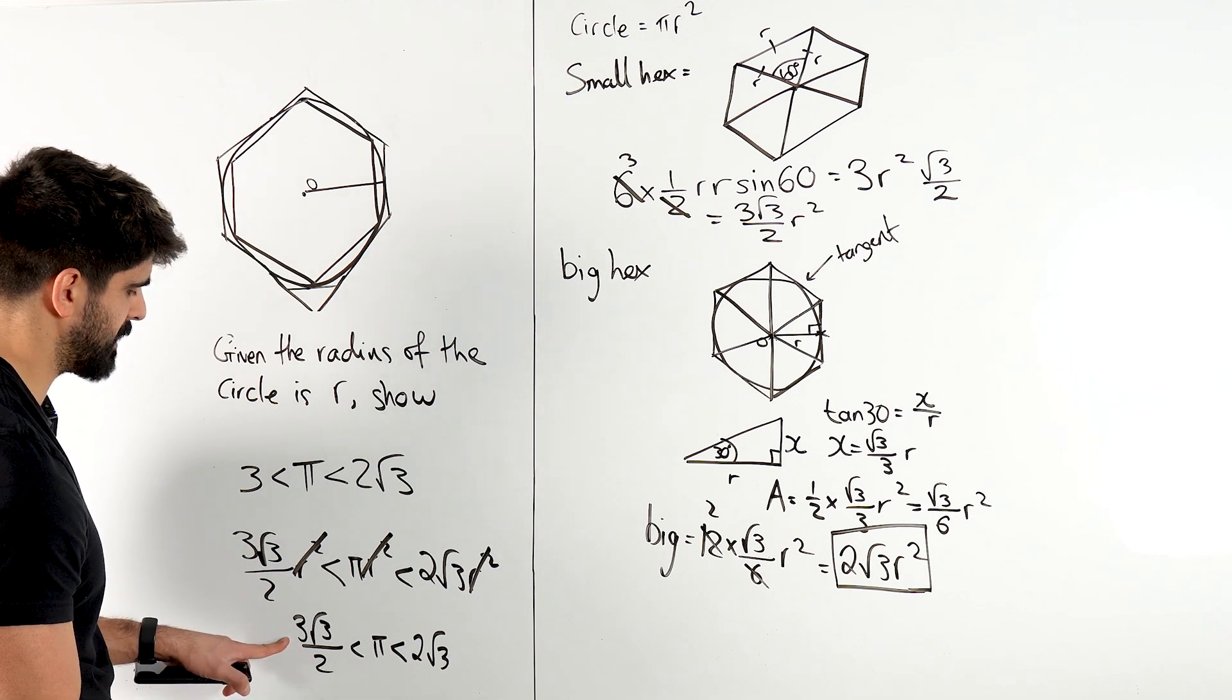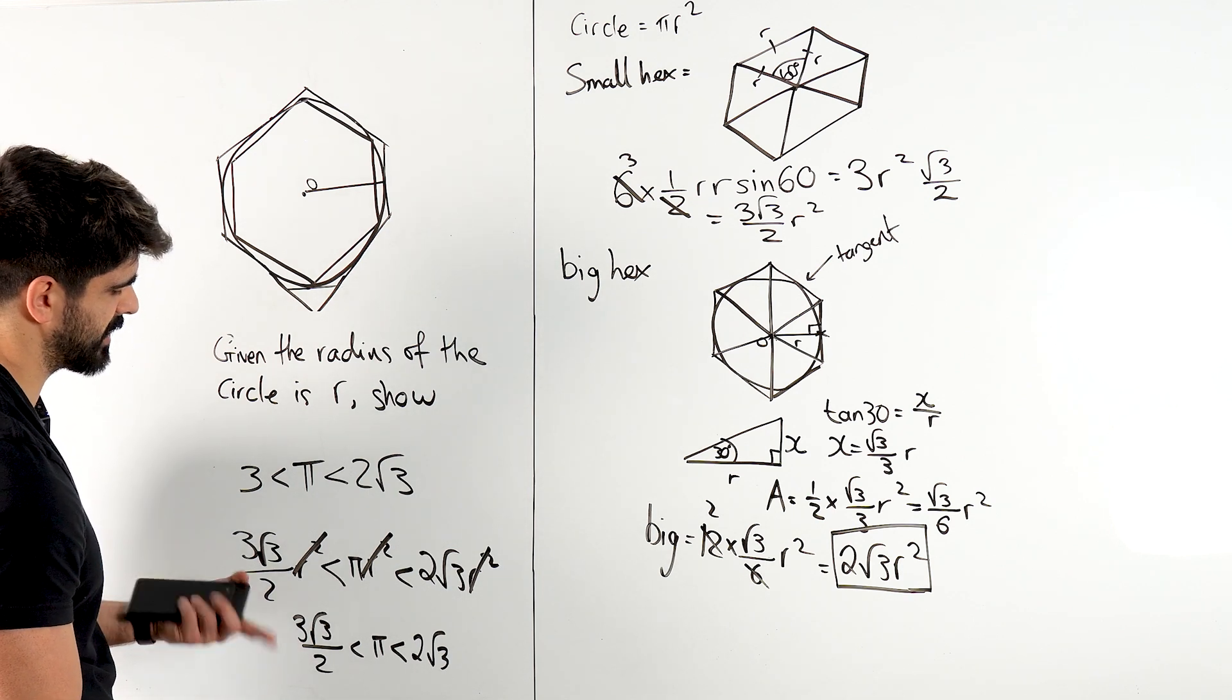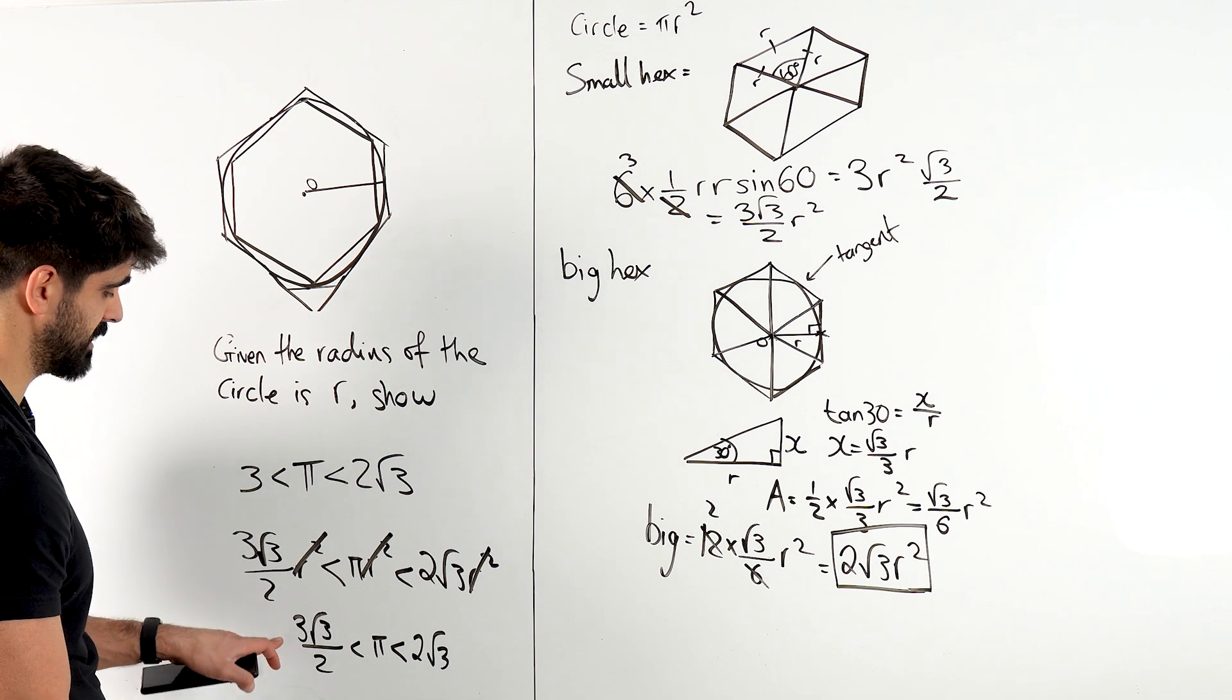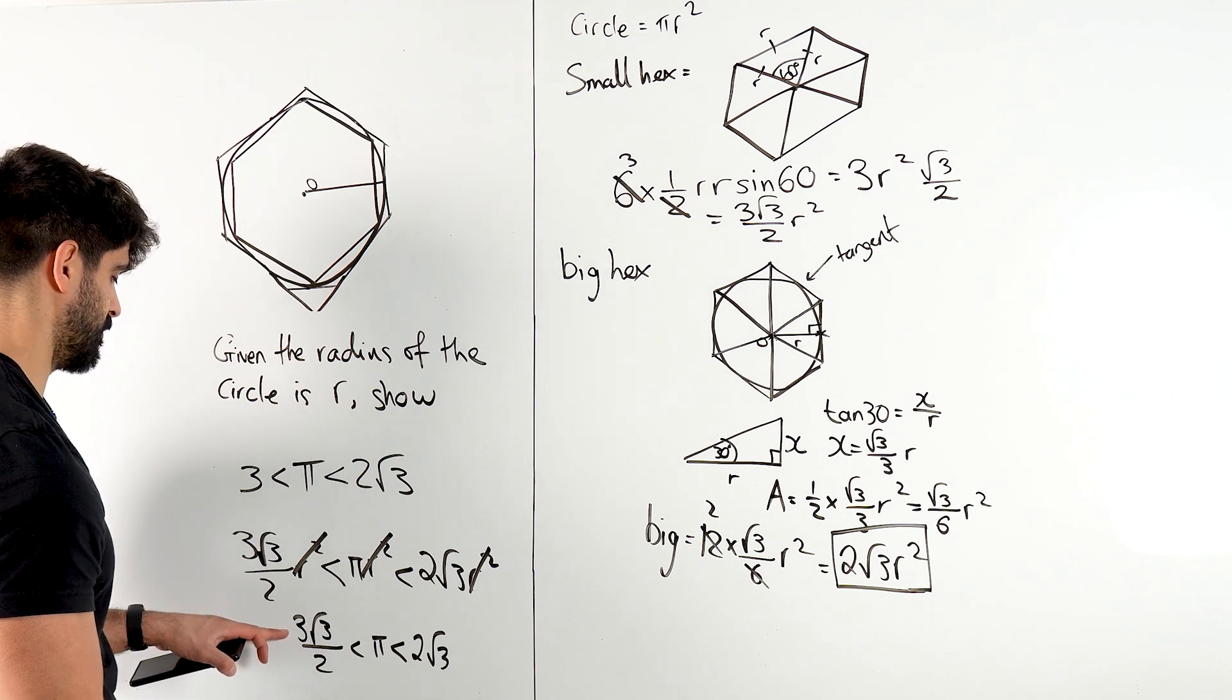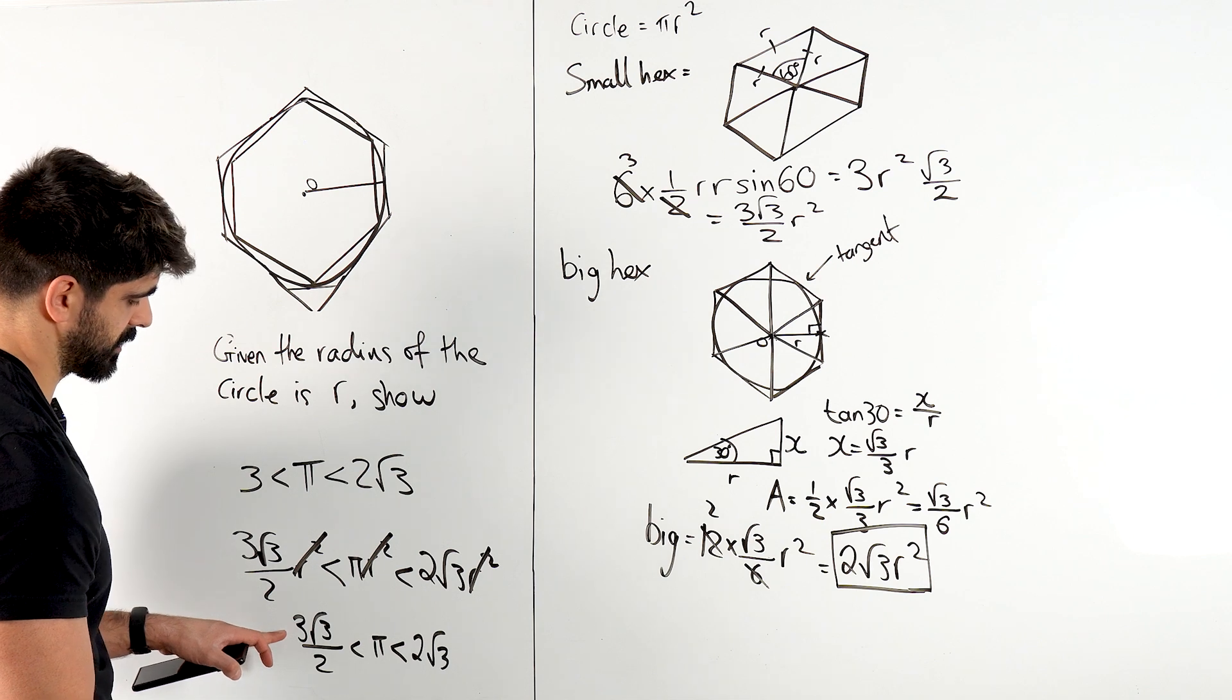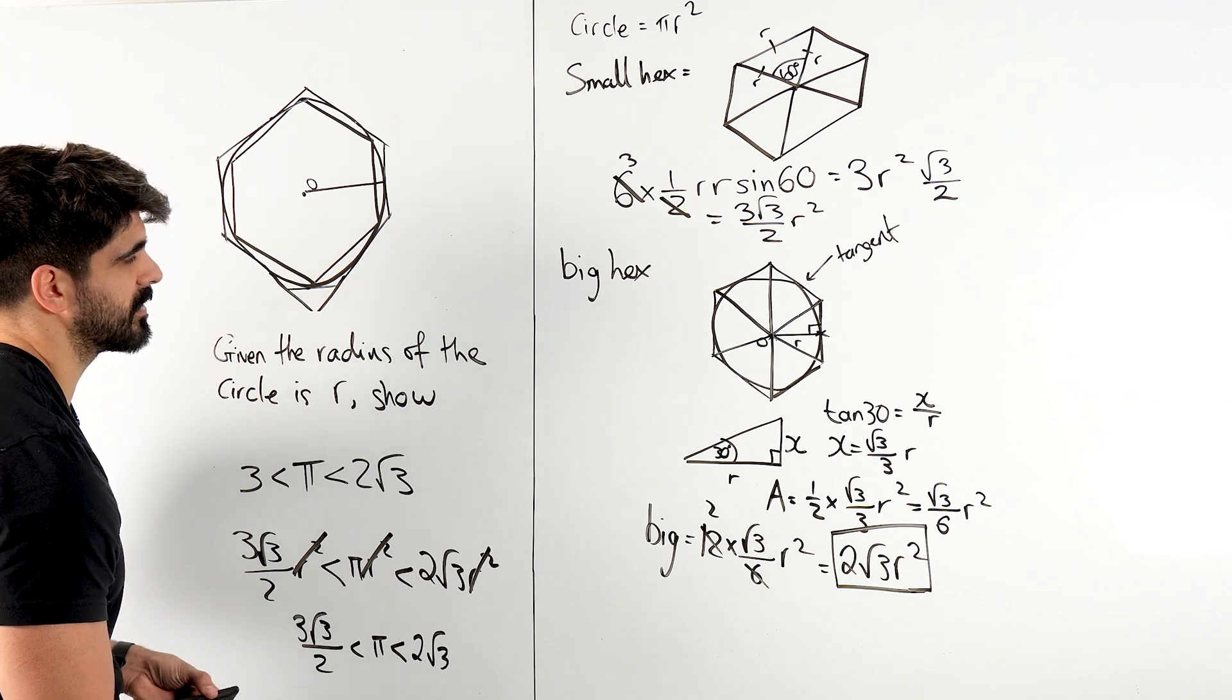But this is clearly bigger than, well, we have to wait, do they want us to prove that that is bigger than 3? Maybe they do. Do they want us to prove that that is bigger than 3? I can't see why that would be the case.